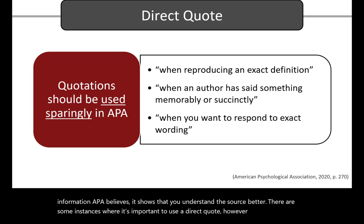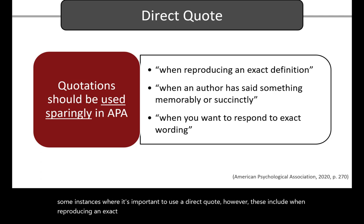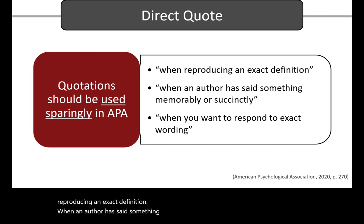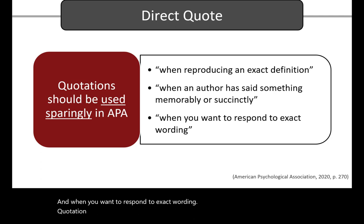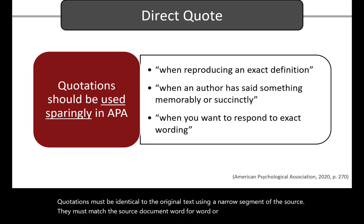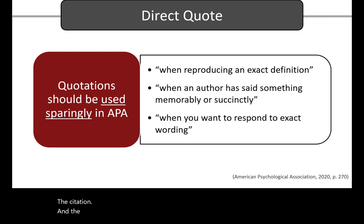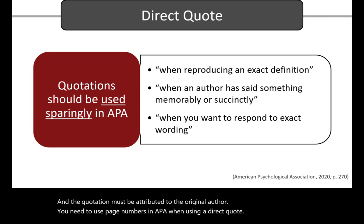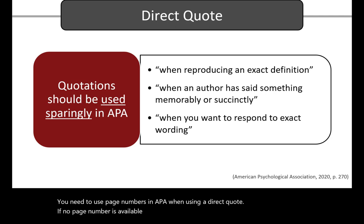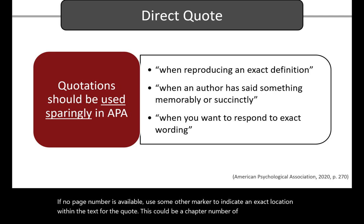These include when reproducing an exact definition, when an author has said something memorably or succinctly, and when you want to respond to exact wording. Quotations must be identical to the original text using a narrow segment of the source. They must match the source document word for word, or clearly indicate a change to the original text using square brackets. The quotation must be attributed to the original author. You need to use page numbers in APA when using a direct quote. If no page number is available, use some other marker to indicate an exact location within the text for the quote. This could be a chapter number, volume number, heading name, or something else.